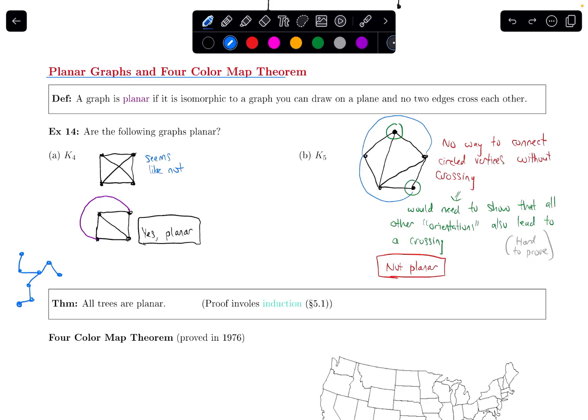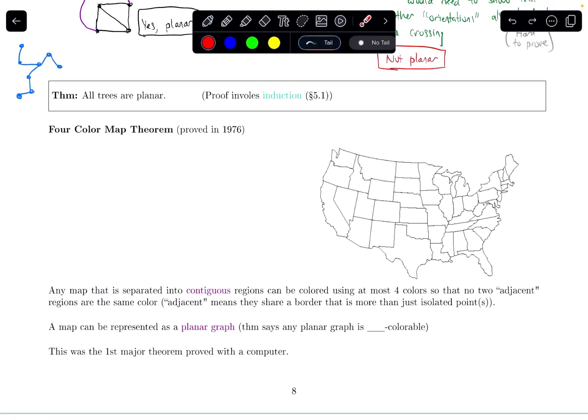And now what I want to end the video by talking about is something called the Four-Color Map Theorem, which was proved just in 1976. So relatively recent, in terms of the very long history of math. So what does this say? Any map that is separated into contiguous regions can be colored using at most four colors, so that no two adjacent regions are the same color.